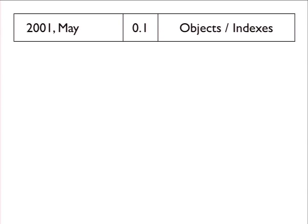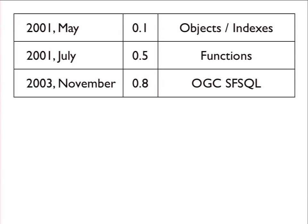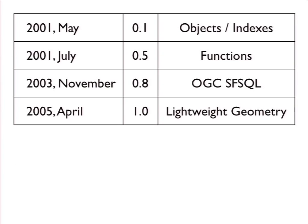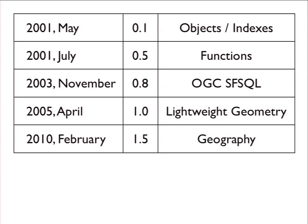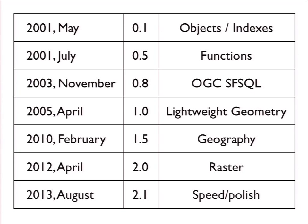Release history: 2001 — first release, just objects and indexes. Shortly after, we added functions so you could ask questions of the data. By 2003, Simple Features for SQL compliance — the international standard for spatial databases. 2005, lightweight geometry 1.0, a performance release. 1.5 brought geography and geodetic support. 2.0 added raster support. And 2.1, the most recent stable release, focused on speed and polish. The release tempo may appear to be slowing, but I like to think we're asymptotically approaching perfection.